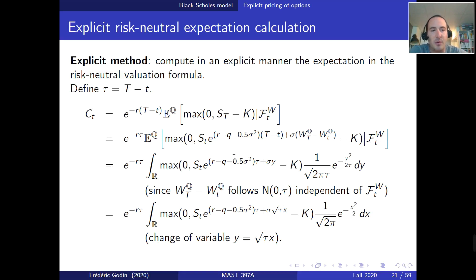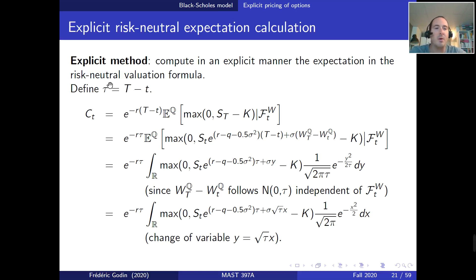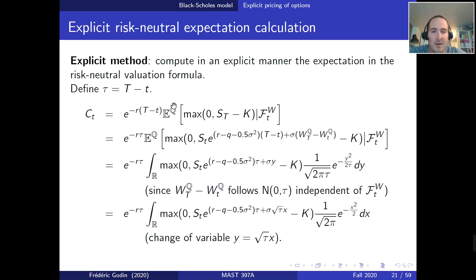We know that we can apply the risk-neutral evaluation formula to obtain an explicit expression for the price of a call option in the Black-Scholes model. Assume we're at time t and we want to price an option maturing at time T. The time to maturity, which is the maturity minus the current date, is going to be denoted by tau. The price of the option at time t, using the risk-neutral evaluation formula, is the discount factor between t and T times the expected value under the risk-neutral measure of the payoff of the call option, given the current information at time t.